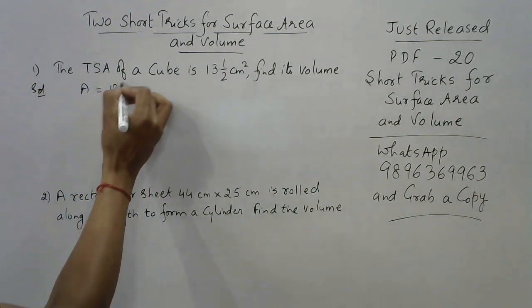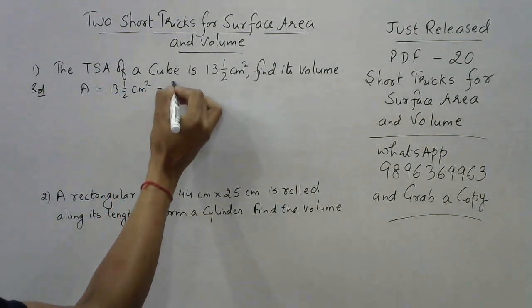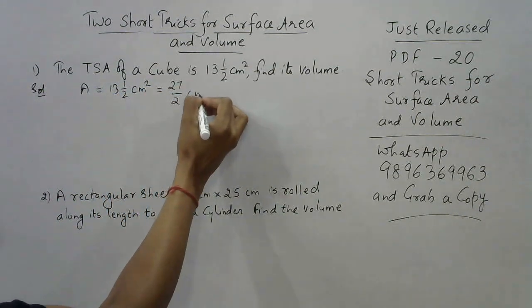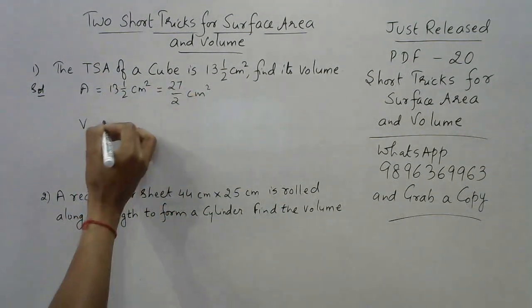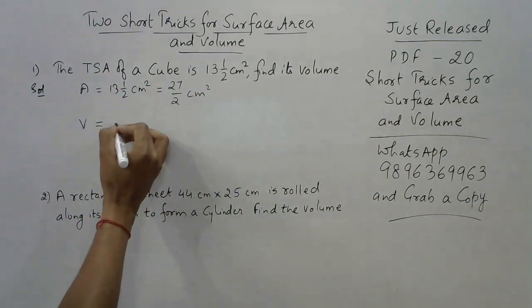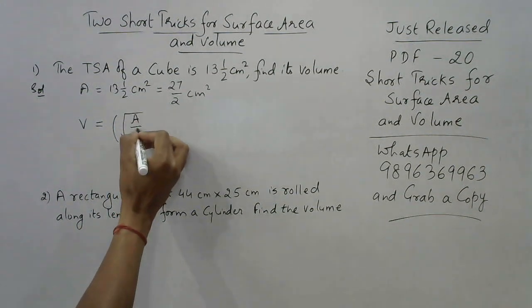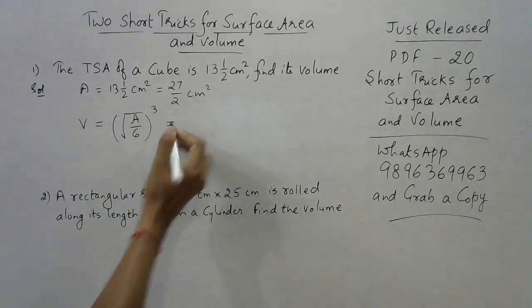In this case, the surface area A is given as 13 and a half centimeter square, that is 27 by 2 centimeter square. For finding the volume of the cube, you can directly apply the formula: square root of A upon 6, whole cube. Easiest formula, easiest short trick to get to the answer.